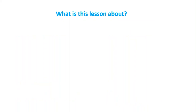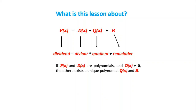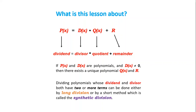So, what is this lesson about? P(x) = D(x) · Q(x) + R. D(x) is the divisor, Q(x) is the quotient, and R is the remainder. If P(x) and D(x) are polynomials and D(x) is not equal to 0, then there exists a unique polynomial Q(x) and R. Dividing polynomials whose dividend and divisor both have two or more terms can be done either by long division or by a short method called synthetic division.